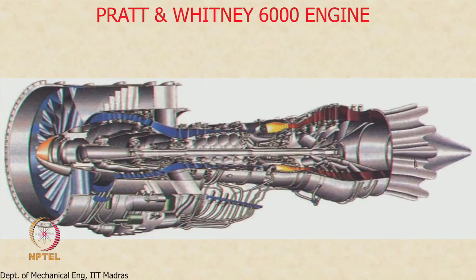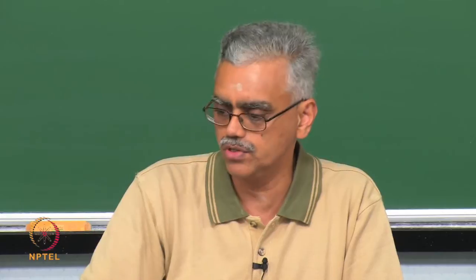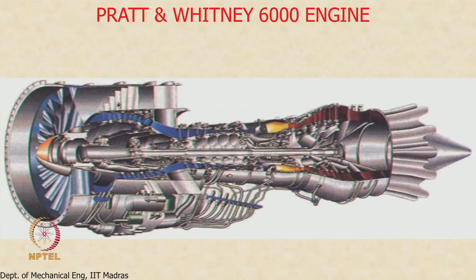The nozzle on the Pratt and Whitney engine has corrugations to enhance mixing and reduce noise. These corrugations generate vortices which enhance mixing and reduce the aerodynamic noise the engine produces. You also see the fan blades, stator vanes in the fan passage, and the fan nozzle.